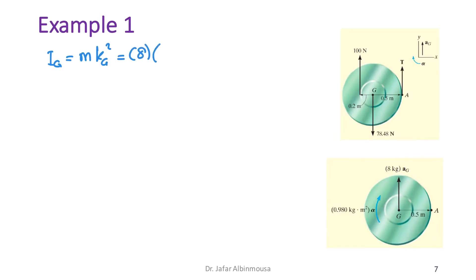This gives I_G = 0.98 kg·m². We can now begin writing the equations of motion.